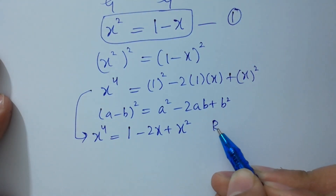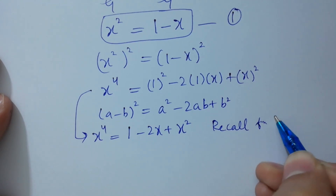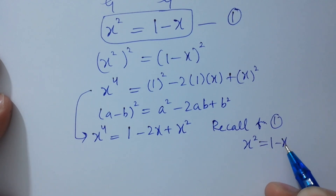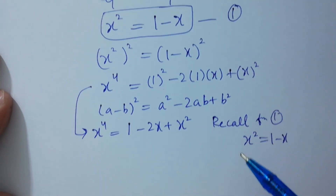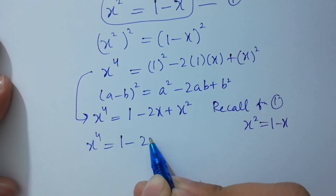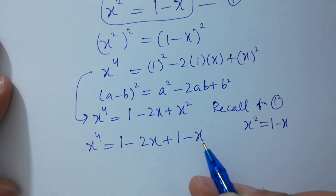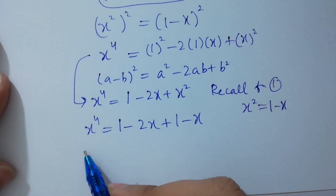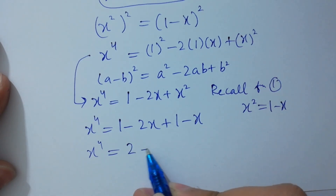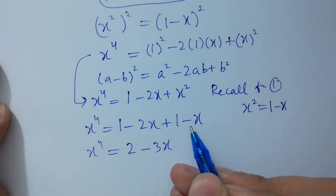Recalling from the first equation, x squared equals 1 minus x. Substituting: x to the power 4 equals 1 minus 2x plus (1 minus x), which gives 1 plus 1 minus 2x minus x, so x to the power 4 equals 2 minus 3x.